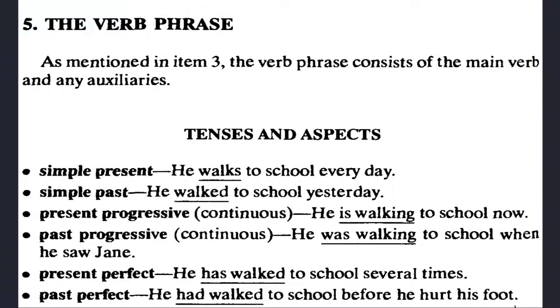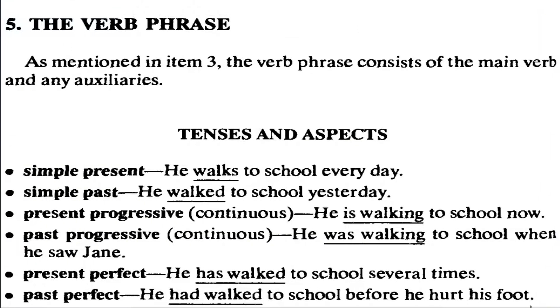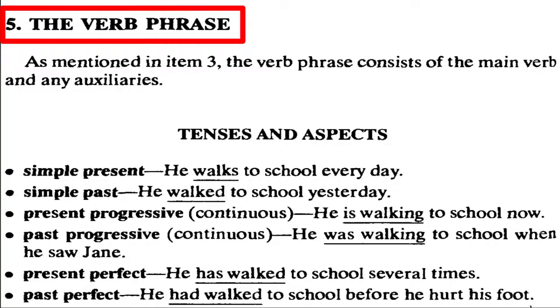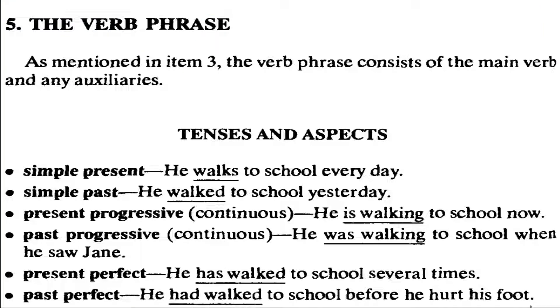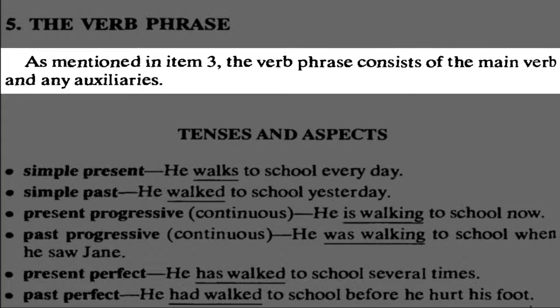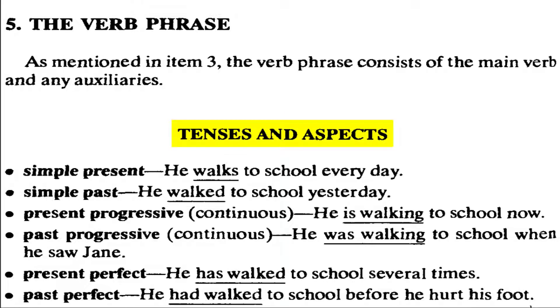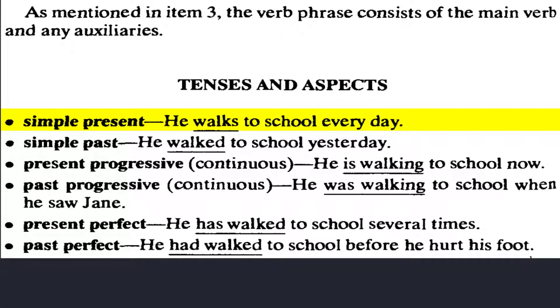Hello guys, Assalamu Alaikum. In this video I am going to talk about the verb phrase, as mentioned in item 3. The verb phrase consists of the main verb and any auxiliaries. The main verb and any auxiliary verb together form the verb phrase. What is tenses and aspects? Simple present tense.